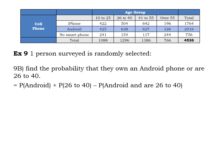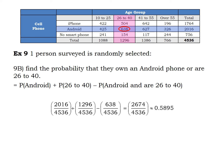Here are the results you should have gotten. We have everybody who owns an Android plus all those in the 26 to 40 age group, minus those who fit into both categories. There are 638 people in that intersection, so they've been counted twice and we need to subtract them, for a grand total of 2674 out of 4536, or the decimal equivalent.